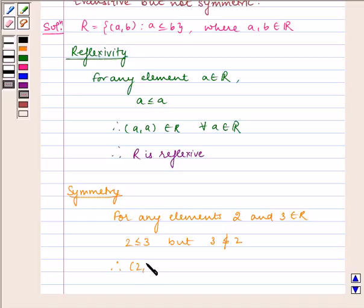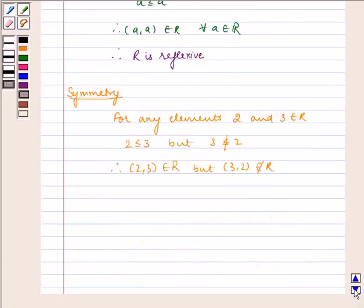Therefore, (2,3) belongs to R but (3,2) does not belong to R. Therefore, R is not symmetric.